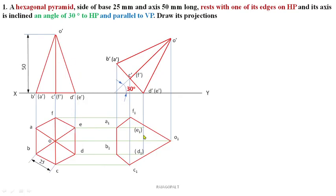After completion of this top view, we have to identify all the hidden lines or hidden edges from the top view. You can observe — if an observer is standing here — ED is the edge, it will be invisible from the top view. As per the question, one of its edges is on HP; if the edge is lying on HP, that particular edge will be invisible from the top view. So D1 and E1 — that is the reason they are denoted in brackets — it has to be marked by means of hidden lines.